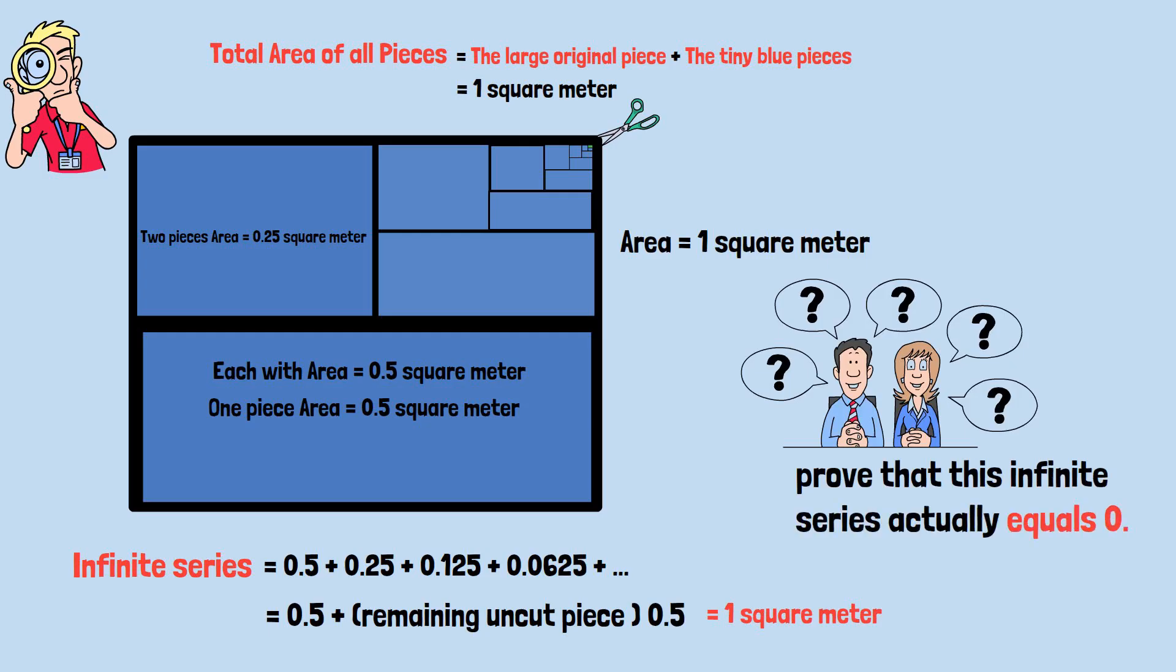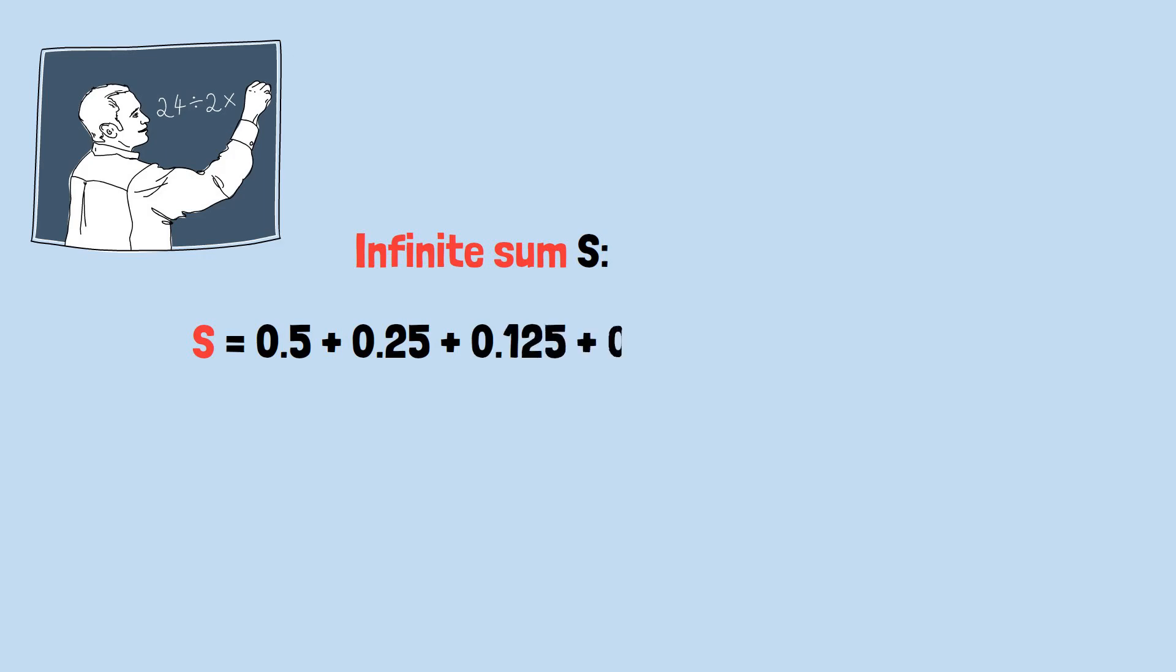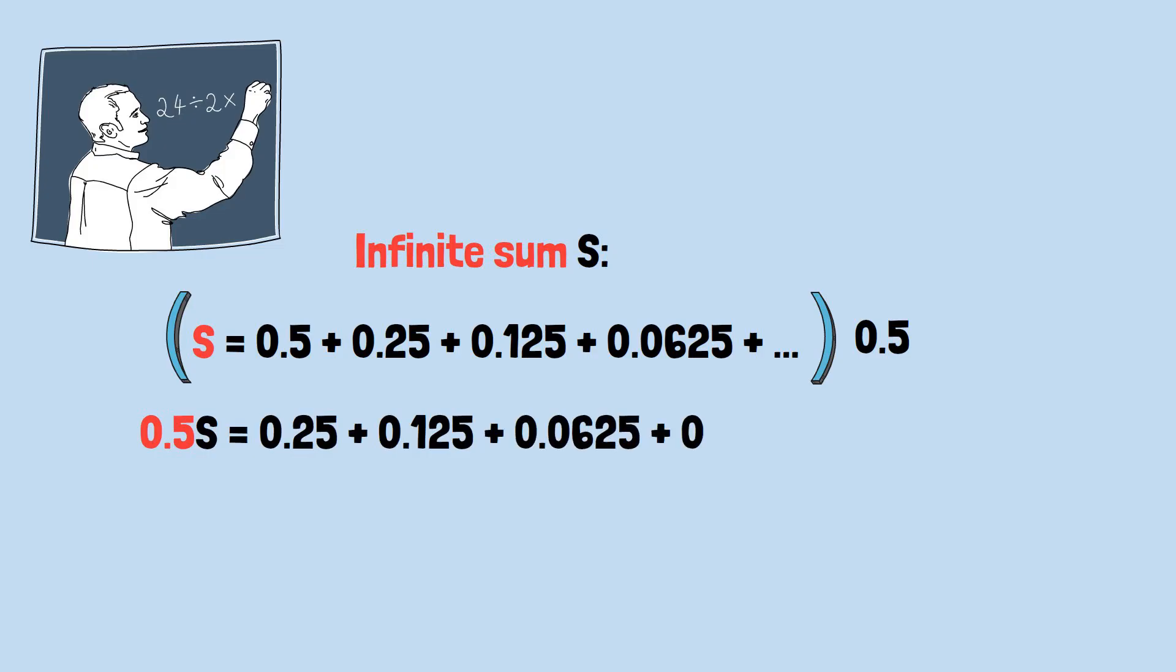Here's the elegant mathematical trick that resolves the paradox. Let's call our infinite sum S. S equals 0.5 plus 0.25 plus 0.125 plus 0.0625 and so on. Now let's multiply the entire equation by 0.5. 0.5 times S equals 0.25 plus 0.125 plus 0.0625 plus 0.03125 and so on. Notice something remarkable: the right side of the second equation is almost identical to the right side of the first equation. It's just missing that initial 0.5.